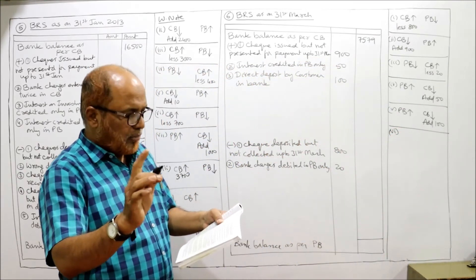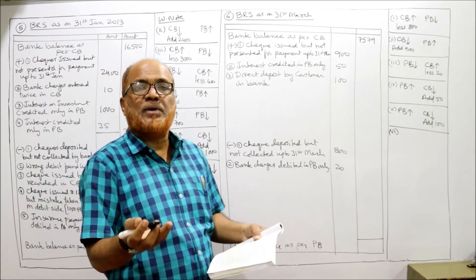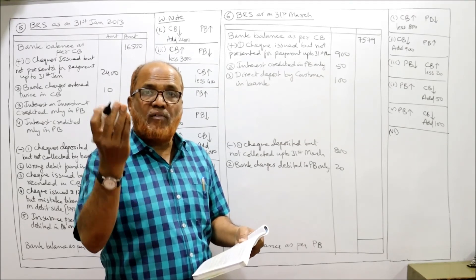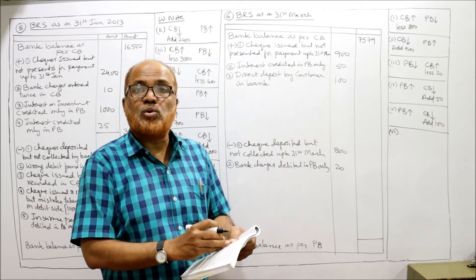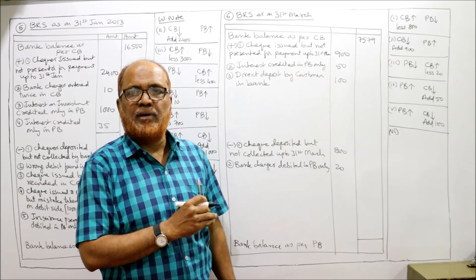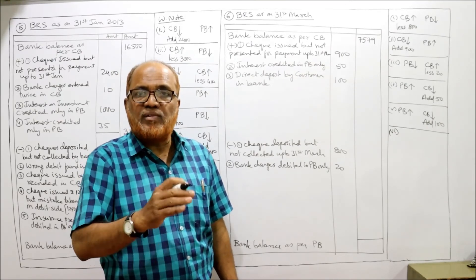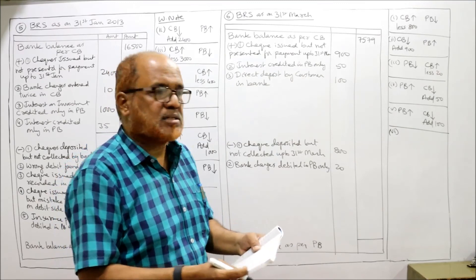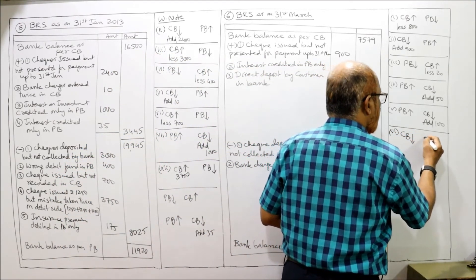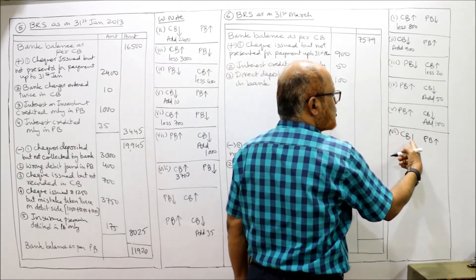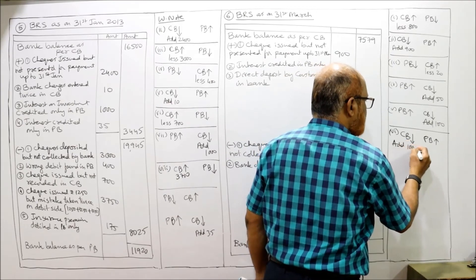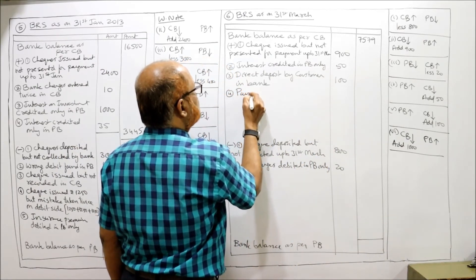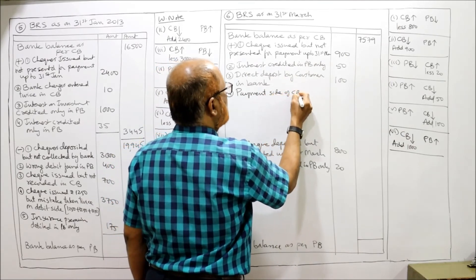Sixth item: the bank column on the payment side of the cash book was found to be overcast by rupees 1000. Overcast means over-added — 1000 rupees extra was added on the credit side of the cash book, causing the cash book balance to decrease. Pass book shows more balance. Our starting point, the cash book, shows less balance, so we add. Add: payment side of cash book overcast — rupees 1000.